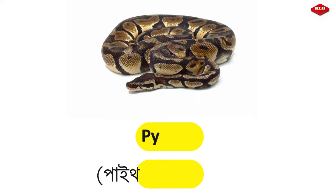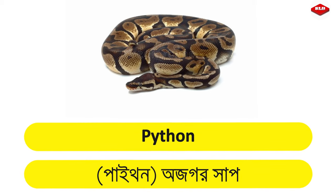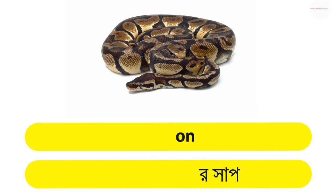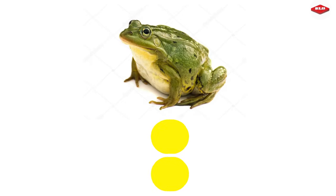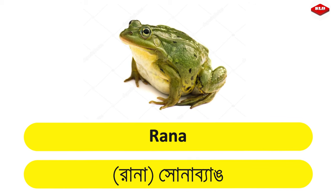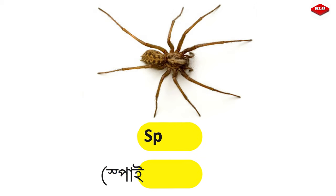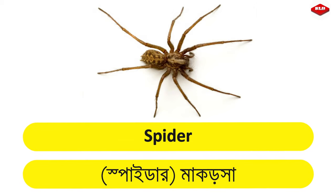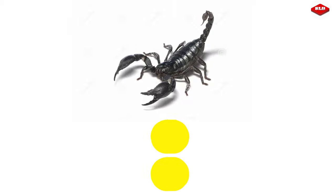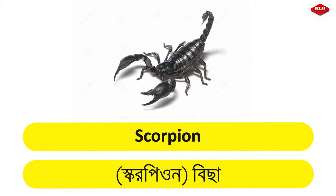Python – Ajogarsha. Rana – Sonabang. Reptile – Shoreshrip. Spider – Makosha. Scorpion – Bichha.